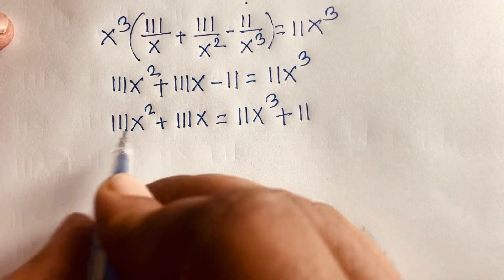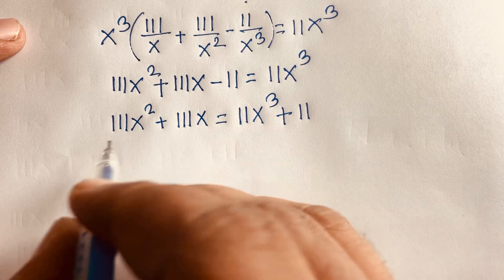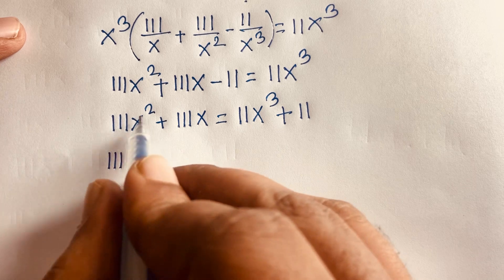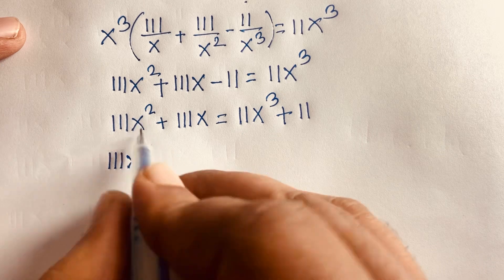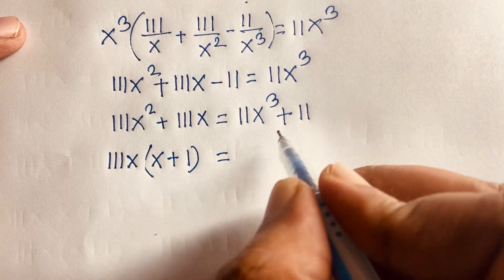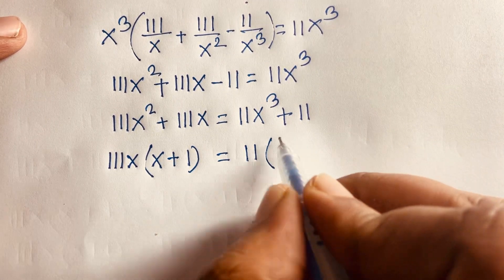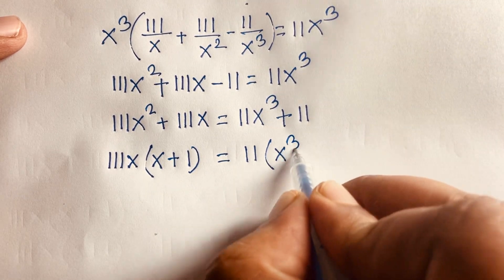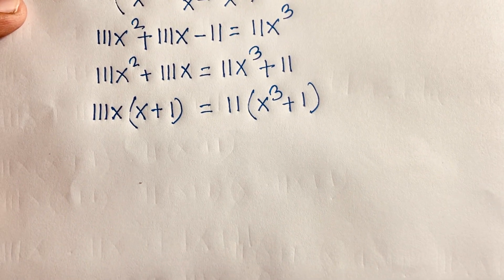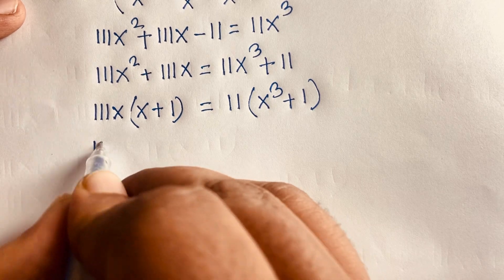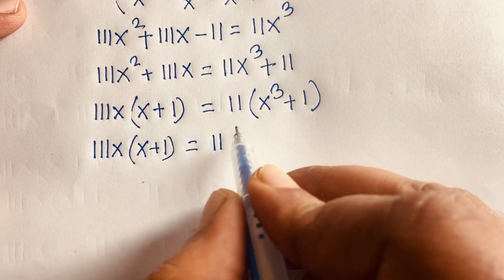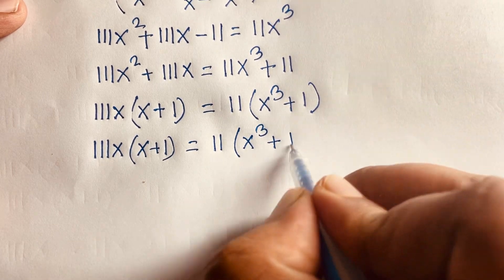Now I can see that 111 is common on the left side. So we factor out 111x, giving 111x times (x plus 1). On the right side, 11 is common, so we factor out 11, giving 11 times (x cubed plus 1). So the equation becomes 111x(x + 1) equals 11(x cubed + 1).